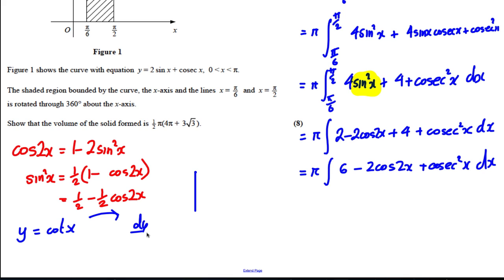Because in the formula booklet it tells me that if y equals cot x and I differentiate this, then dy by dx equals negative cosec squared x. So integrating cosec squared must give me negative cot.